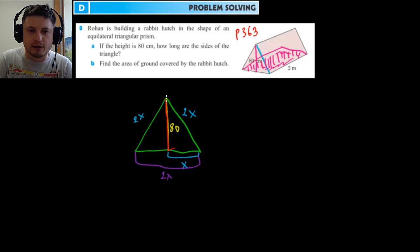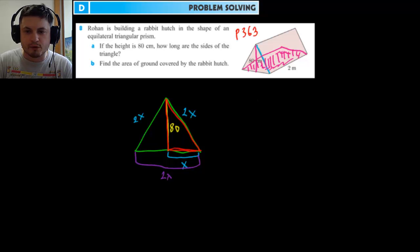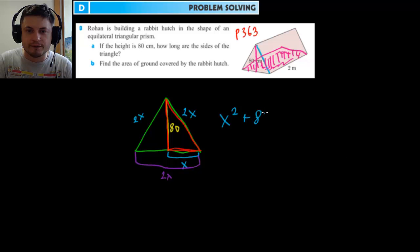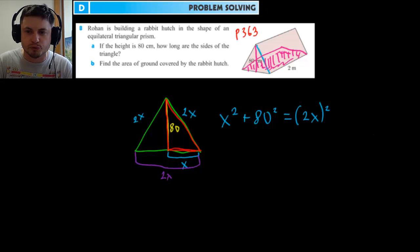Now we're looking at the right triangle formed. It has three values and we can use Pythagoras theorem. The square of the two legs — x squared plus 80 squared — equals the square of the hypotenuse, which is (2x) squared. Don't forget to put 2x in brackets because we're squaring both the 2 and the x.